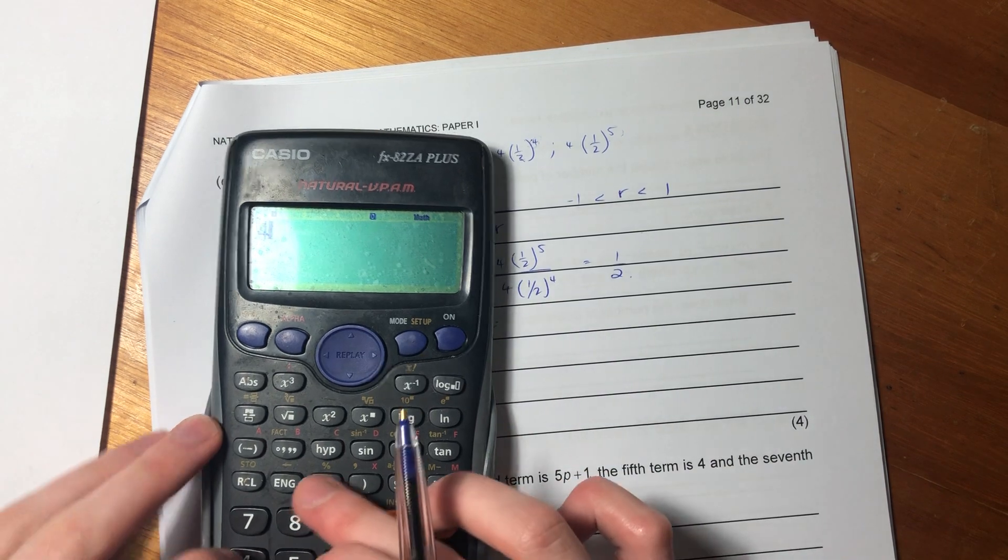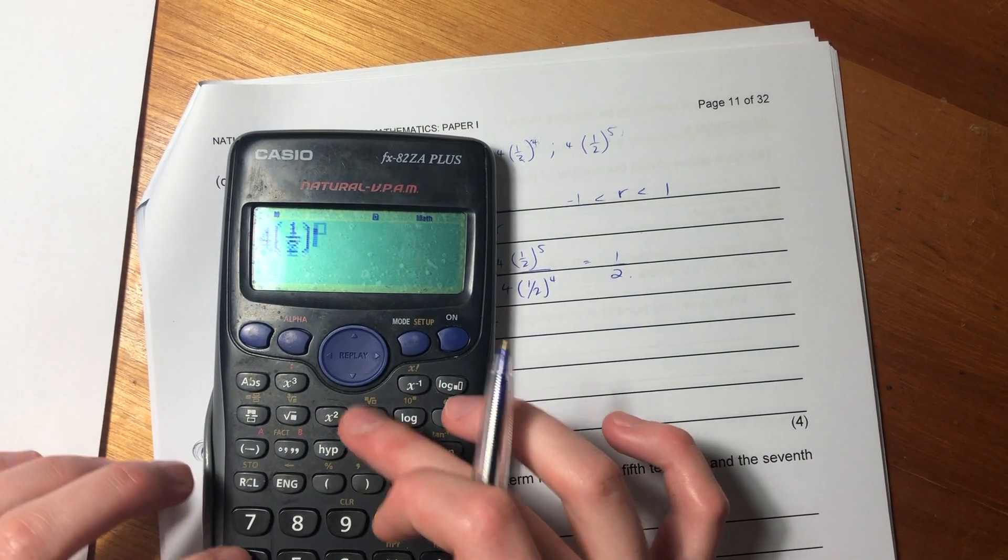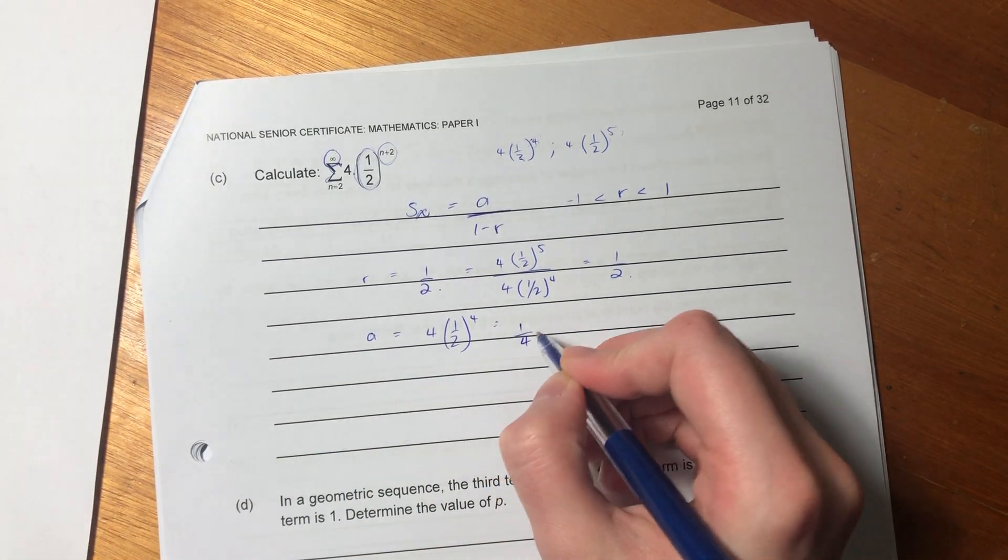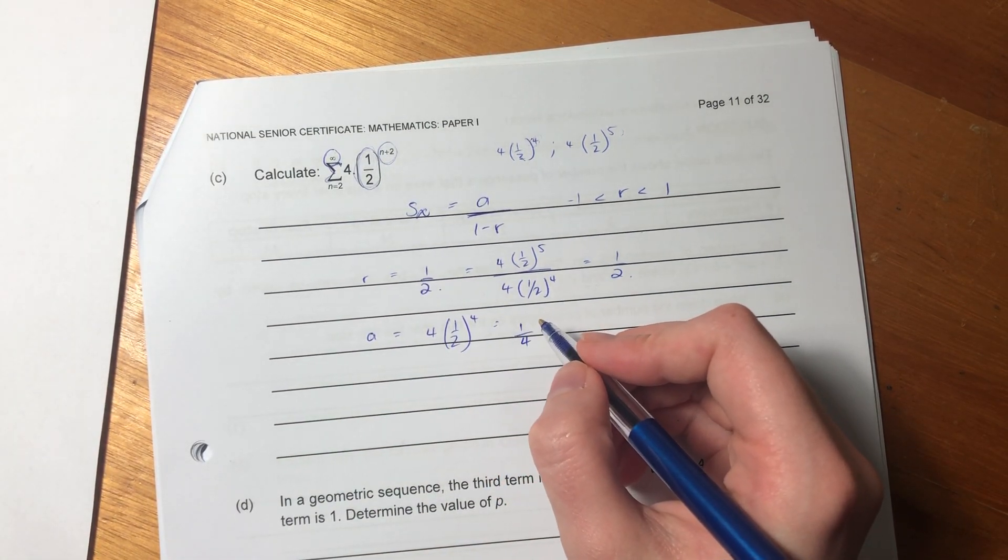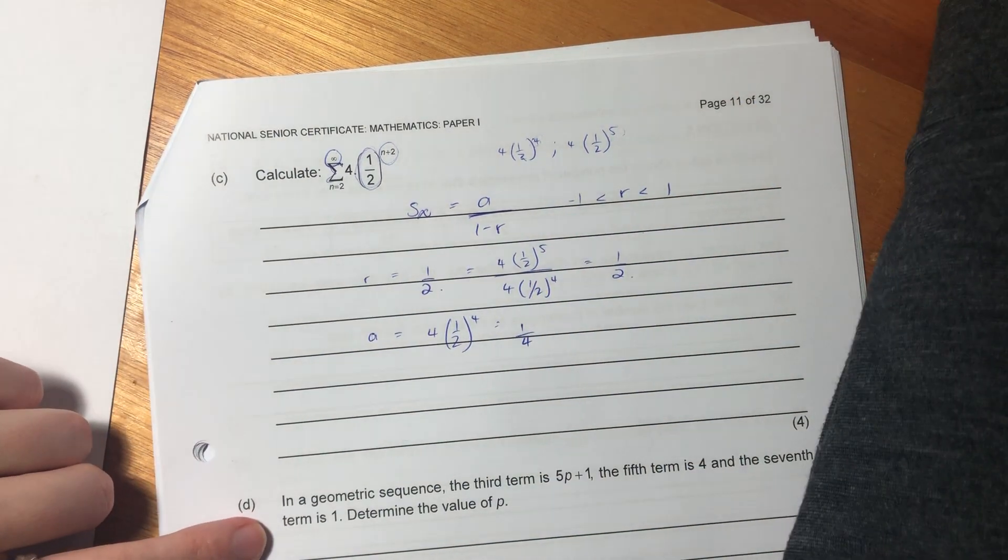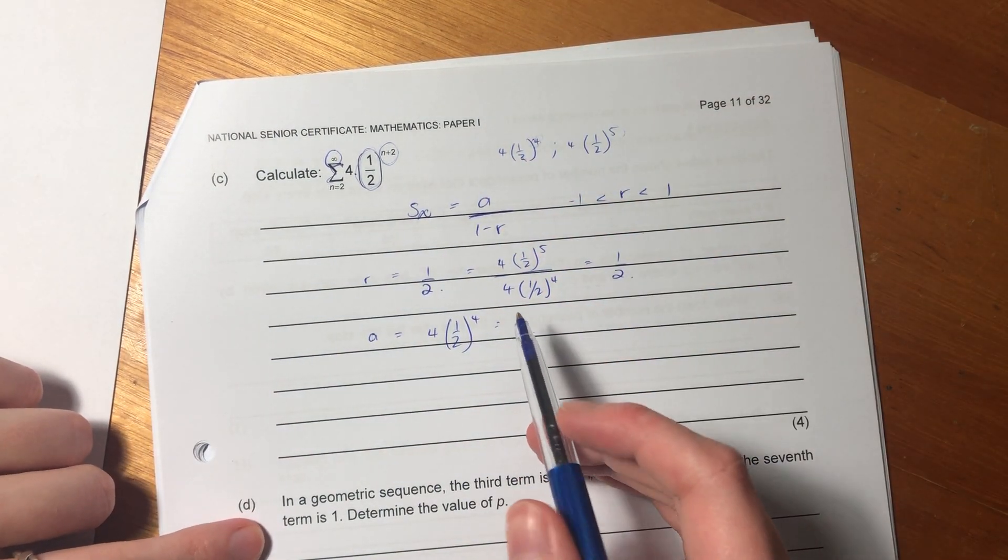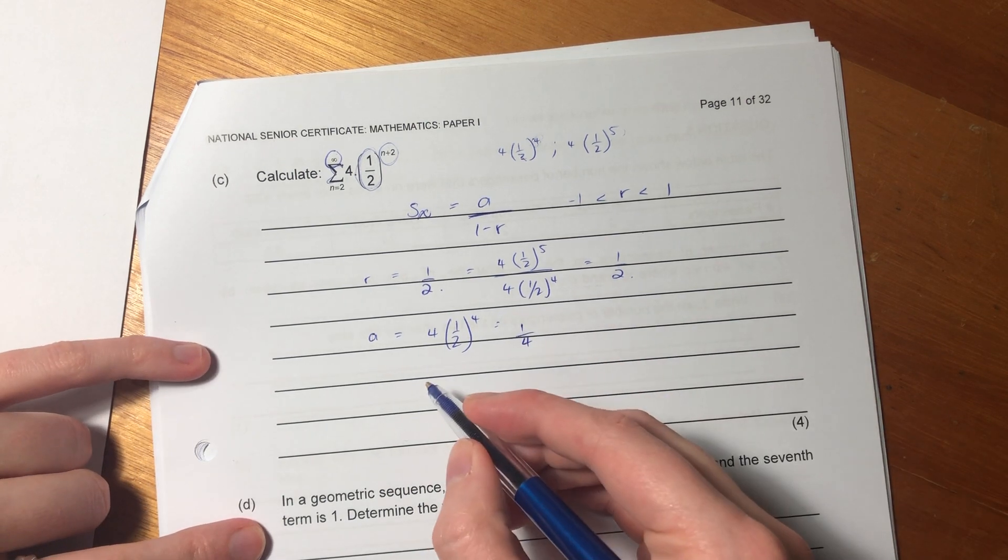Let me just show you how I do that. Importantly, make sure you type it in correctly because it's easy to get wrong. So that's 1 over 4. So now all we need to do is we need to sub it into our calculation. So let's pop it in.